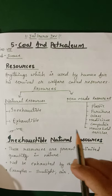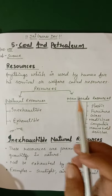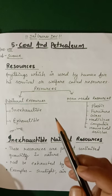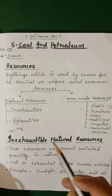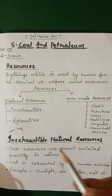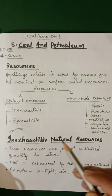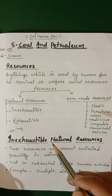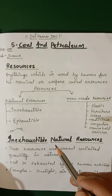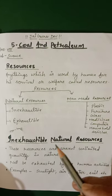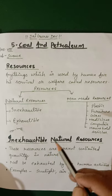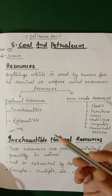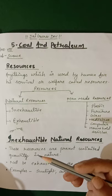Let's start with the introduction. Students, we use various materials for our basic needs which we see in our surroundings. Some of them we obtain from nature like sunlight, air, water, soil, forest, minerals, plants and animals.